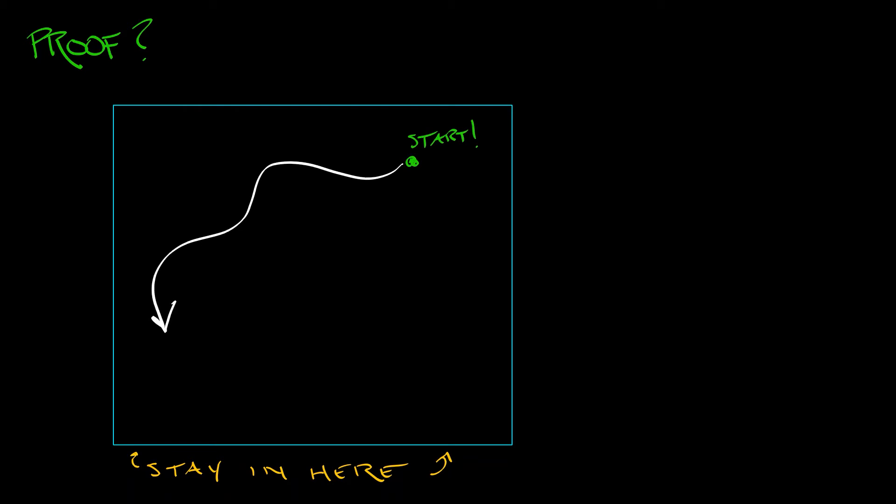But you can get the intuition for what is going on, and maybe a little bit of intuition for what the proof is. Let's say that you've got some region, some bounded region in the plane, and you've got a forward orbit that stays in there for all time. So pick a point, start there, and then just go. Just run around, and you're doing your thing, but eventually you're going to kind of run out of room.